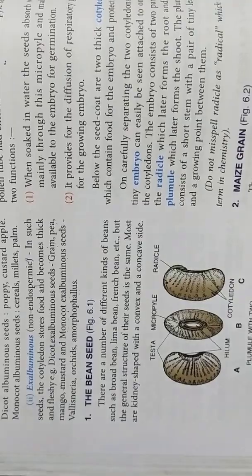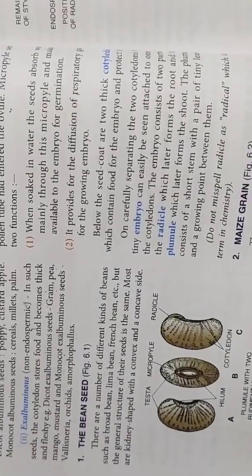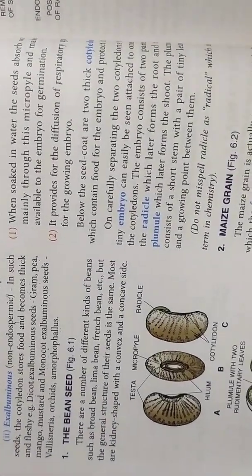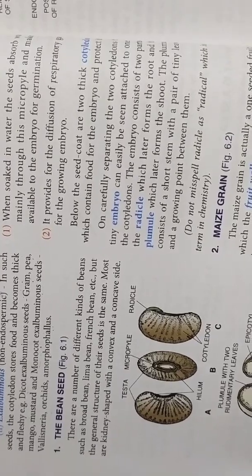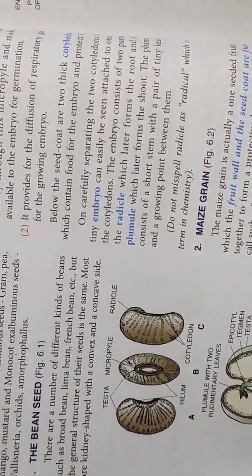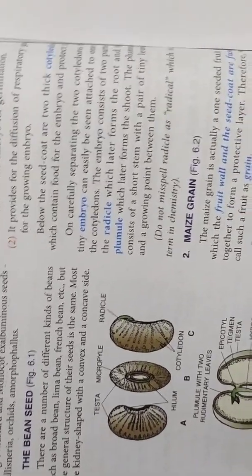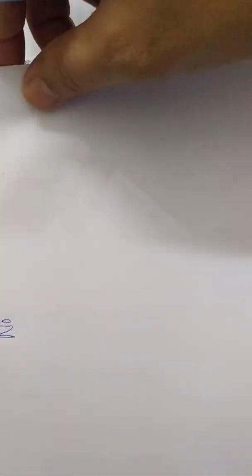Now basically in this chapter, in your syllabus, you have to study two seeds in detail. One is dicot and one is monocot. So dicot seed, we are going to study the structure of the bean seed.